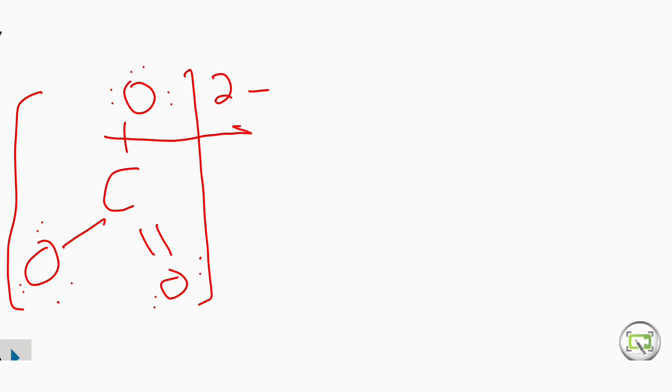On this oxygen, it has six valence electrons and six non-bonding electrons, and the bonding electrons are two. So the calculation is six minus six minus two divided by two. This equals six minus six minus one, which equals minus one. So this oxygen carries a minus one charge, and the other single-bonded oxygen also carries minus one charge.